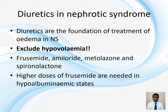Remember that furosemide is carried to the distal tubule bound to albumin, so in hypoalbuminemic states you need to use higher doses of furosemide to get sufficient amounts to the tubule. Fluid restriction is also an essential component of managing edema in nephrotic syndrome. Before starting diuretics, restrict fluid — sometimes fluid restriction alone suffices. Restriction should be 70% of normal maintenance, sometimes even 50%, to help resolve the edema.